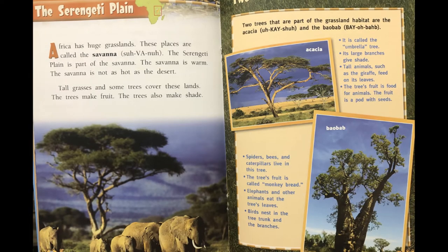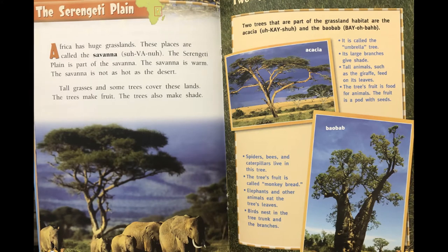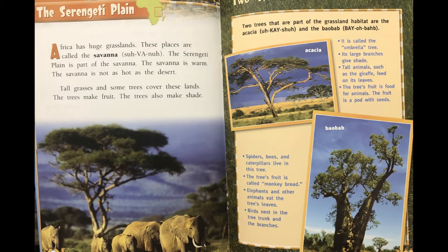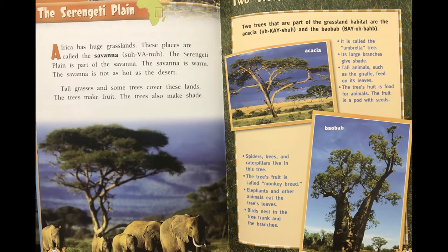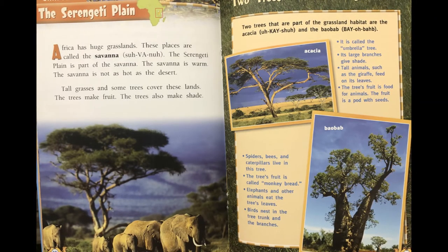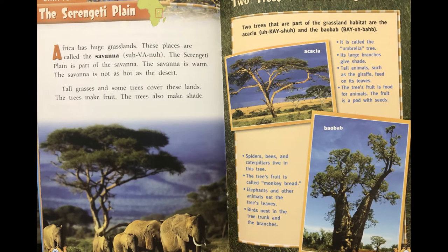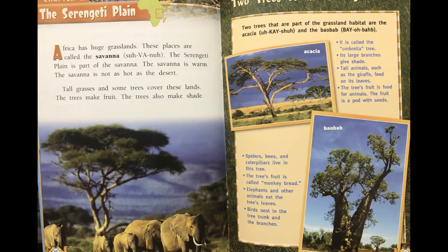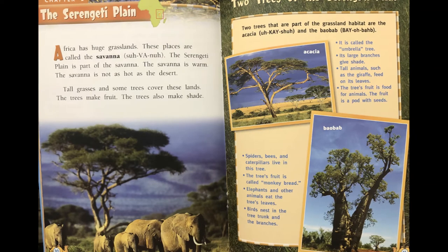The Serengeti Plain. Africa has huge grasslands called the savannah, and the Serengeti Plain is part of the savannah. The savannah is warm — not as hot as the desert. Tall grasses and some trees cover these lands. The trees make fruit and also provide shade.